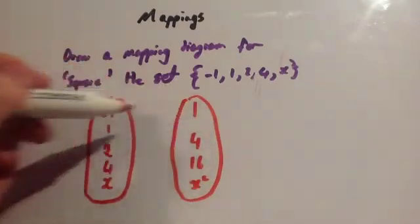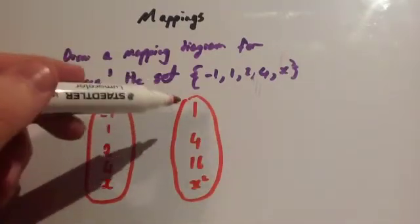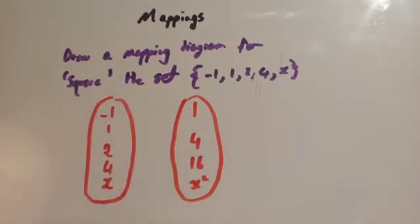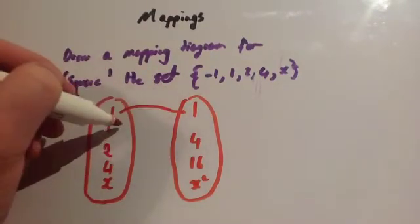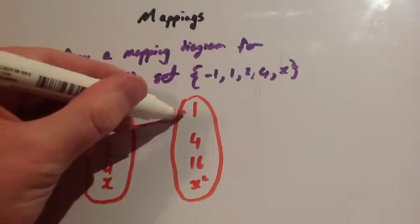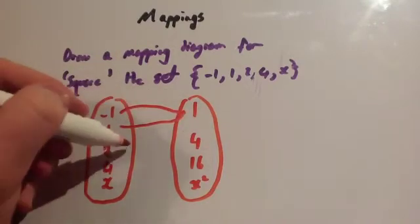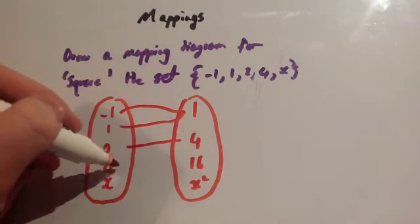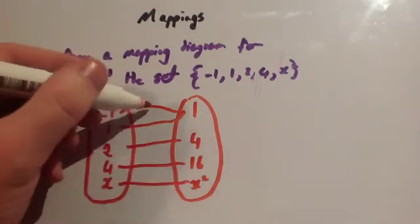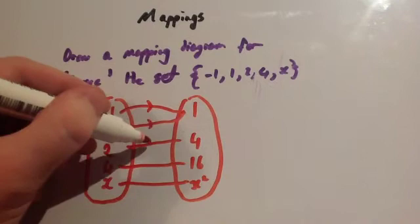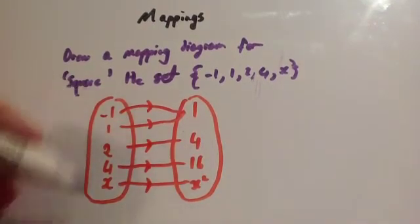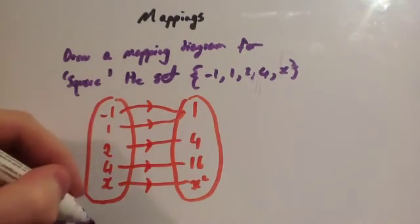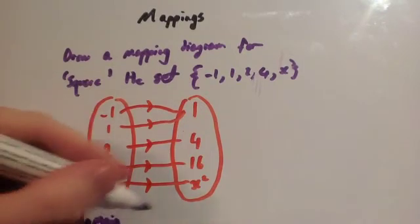Now draw your arrows: minus 1 goes to 1, and 1 also goes to 1. Then 2 goes to 4, 4 goes to 16, and x goes to x squared. This left-hand side is your domain — the values you're putting in — and the right-hand side is your range.